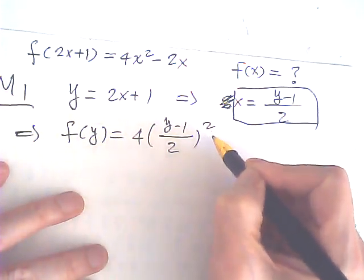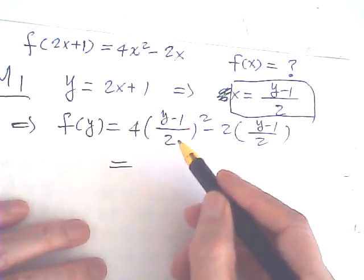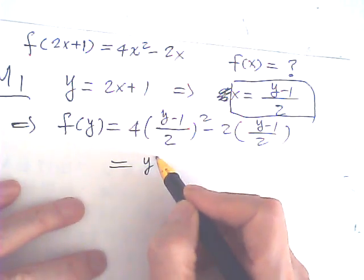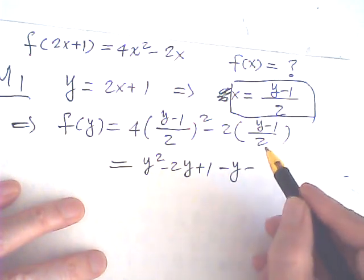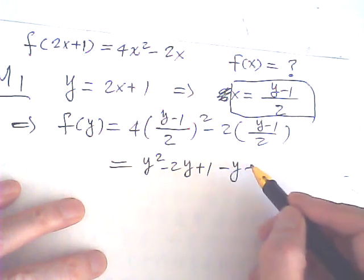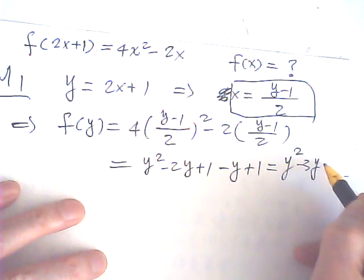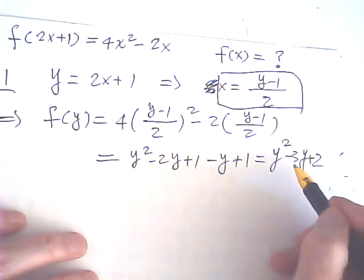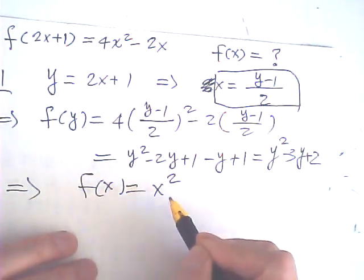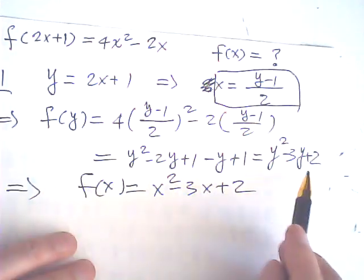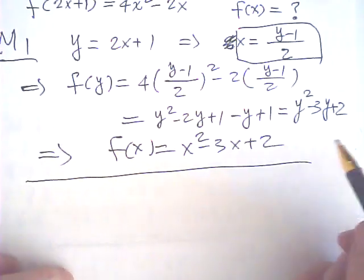So y squared minus 2y minus 1... this is equal to 4. The 4s cancel out. So y squared minus 2y plus 1, minus y plus 1 equals y squared minus 3y plus 2. So that means f(x) is equal to x squared minus 3x plus 2, because y and x are just dummy variables. This is the most often used method.